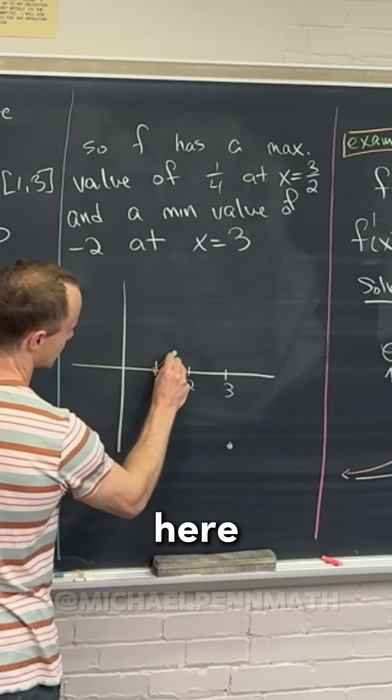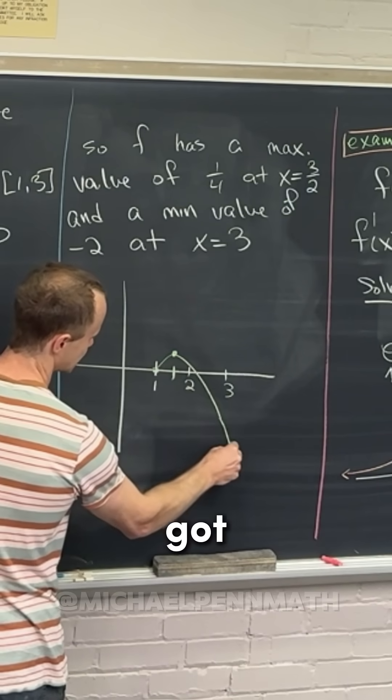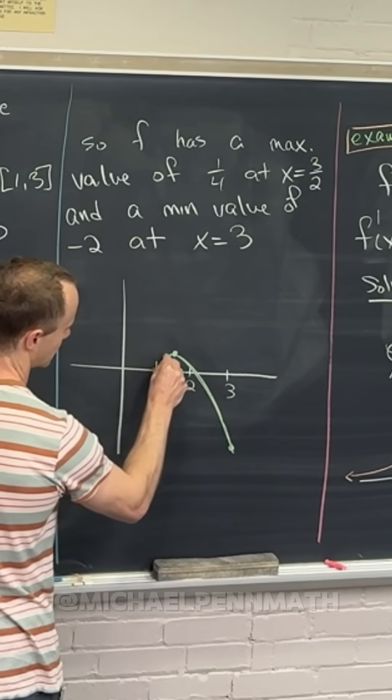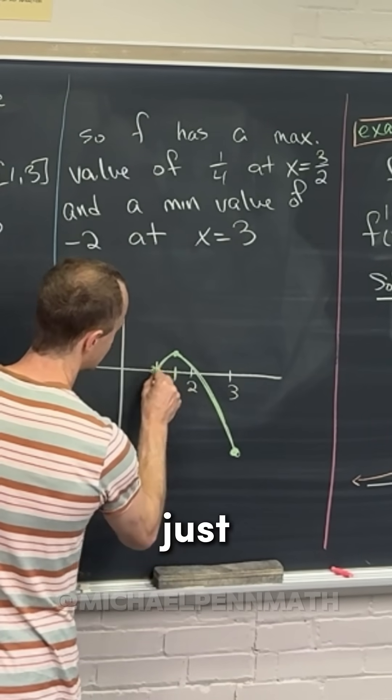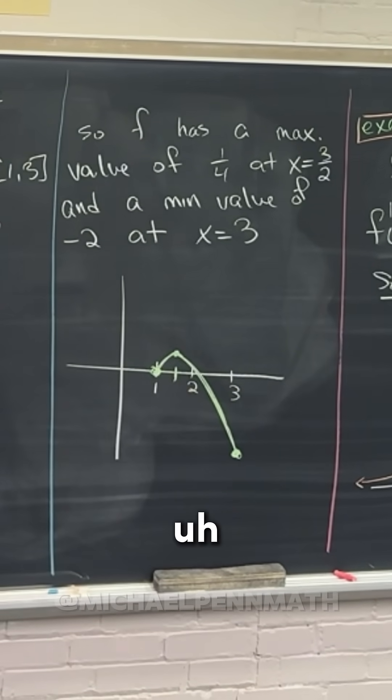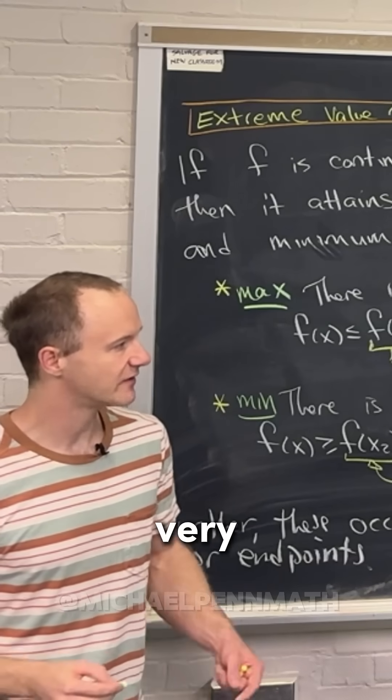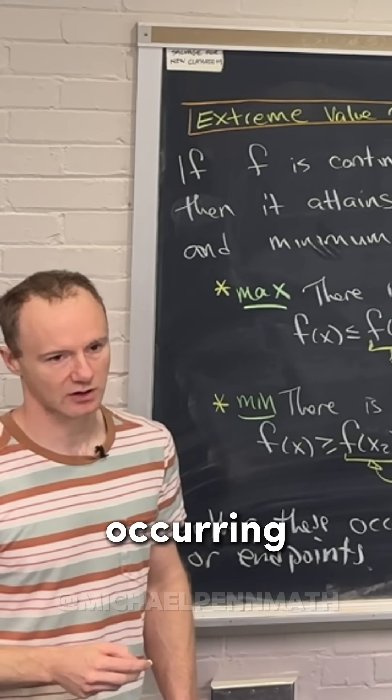1 is going to give you the value of 0, then 3 gives you the value of negative 2, which is down here. So we got something like this. So that's the picture of this graph just between 1 and 3. So we can very, very clearly see that maximum occurring at the critical point and that minimum occurring at the endpoint.